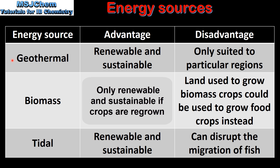Next we look at geothermal, biomass and tidal. A disadvantage of geothermal is that it's only suited to particular regions. Biomass is only renewable and sustainable if the crops are regrown, and land used to grow biomass crops could be used to grow food crops instead. And tidal can disrupt the migration of fish.